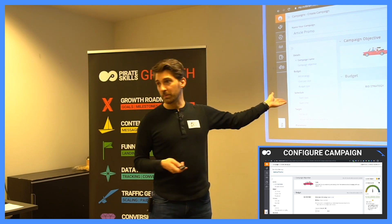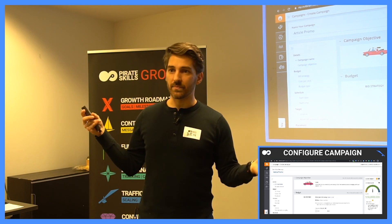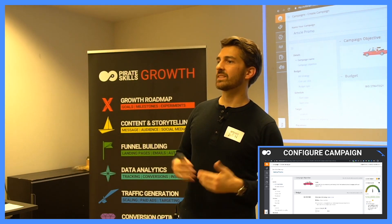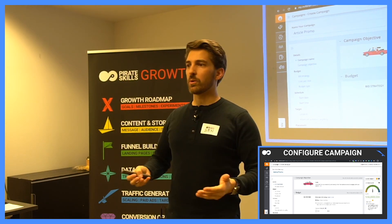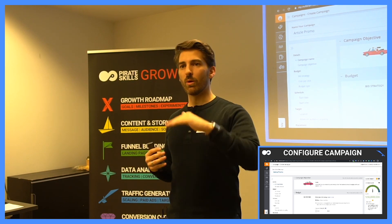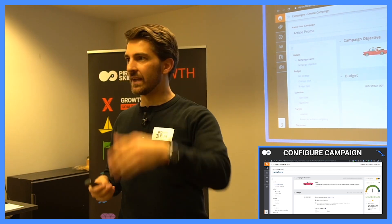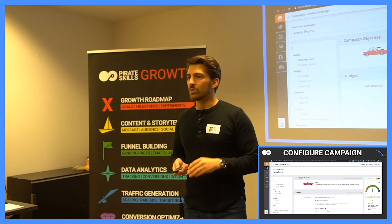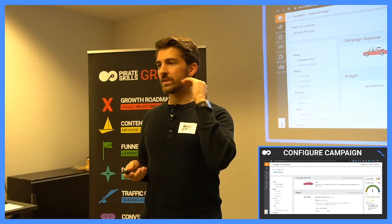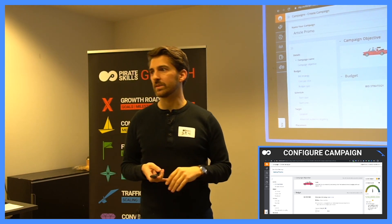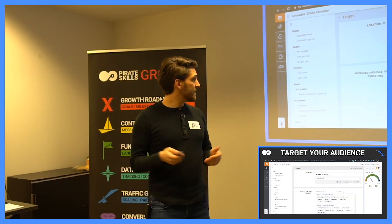For bidding, I choose clicks and set it at ten cents. An Outbrain rep will tell you to start at 70 cents and go lower — that's good advice — but I usually try to lowball them and see what happens at 10 cents. If nothing works, I create another campaign starting at 30 cents. Starting around 10 to 30 cents has worked for me, and I keep trying to go lower once I've cut the placements I don't like.